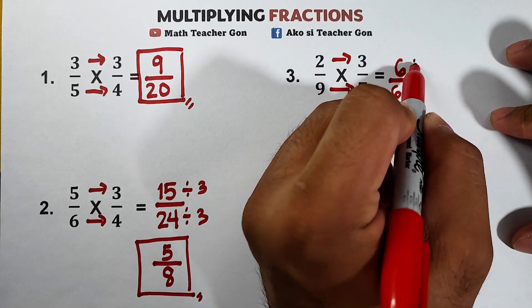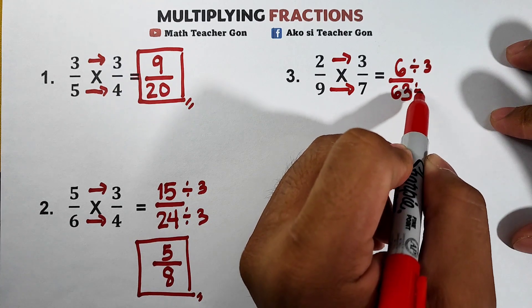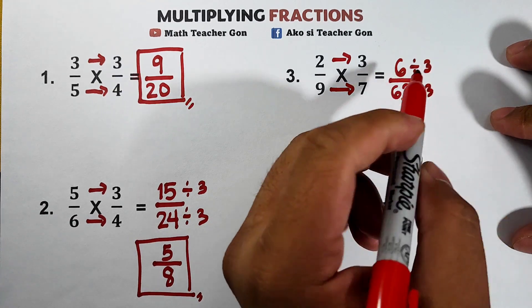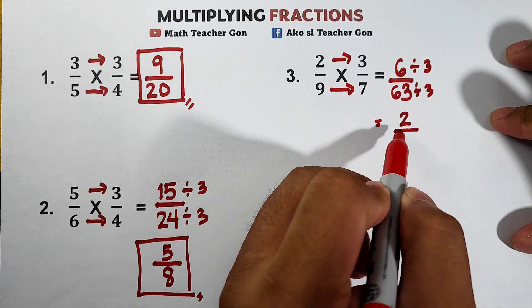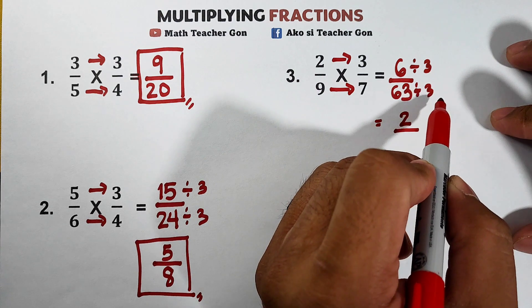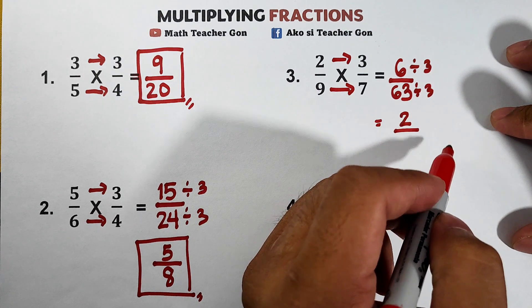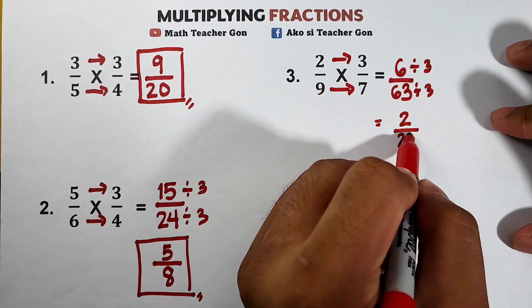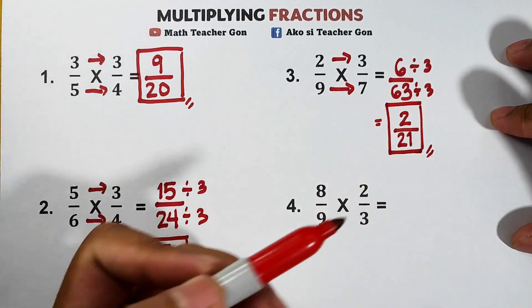Very good. Their GCF is equal to 3 so we will divide this by 3. 6 divided by 3 is equal to 2 over 63 divided by 3. This is equal to what? The answer is 2 over 21 and this is now the final answer in item number 3.